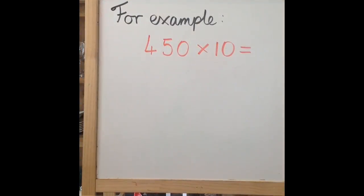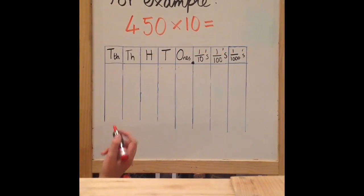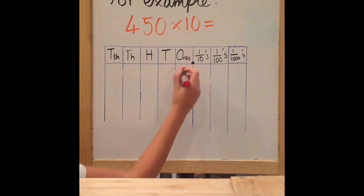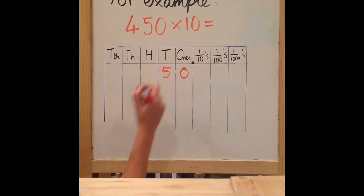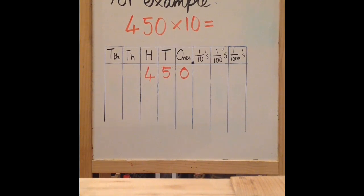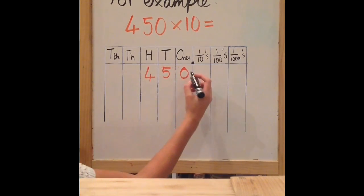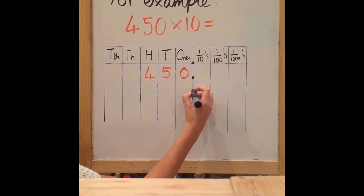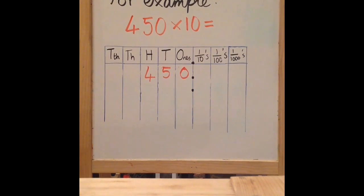For example, if you were given the calculation 450 multiplied by 10, you would first need to write the numbers under their place value headings. Put the 0 in the 1's column, the 5 in the 10's column, and the 4 in the 100's column. It's important to remember that the decimal point never moves — I always put my decimal point here so I know it's fixed and it doesn't move.